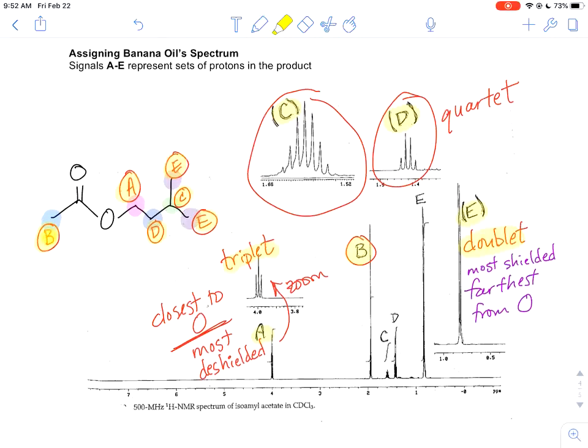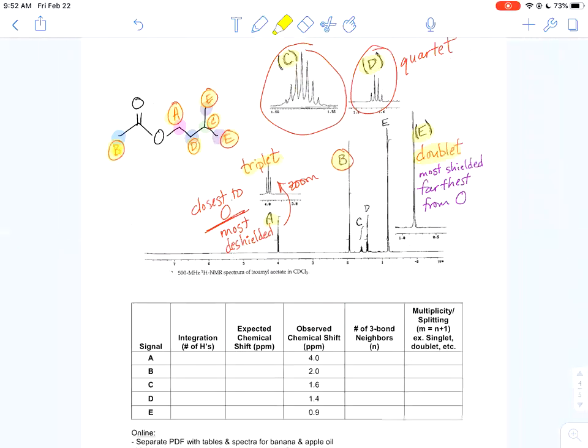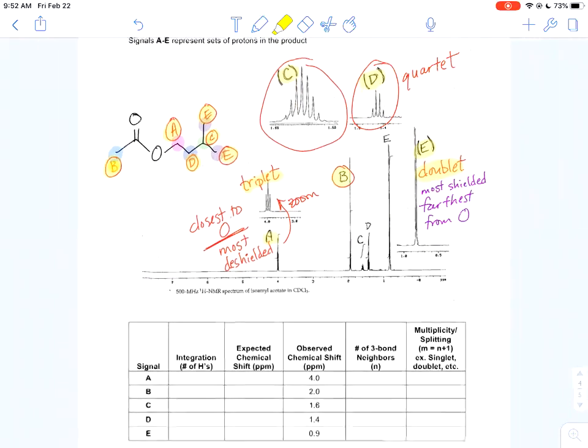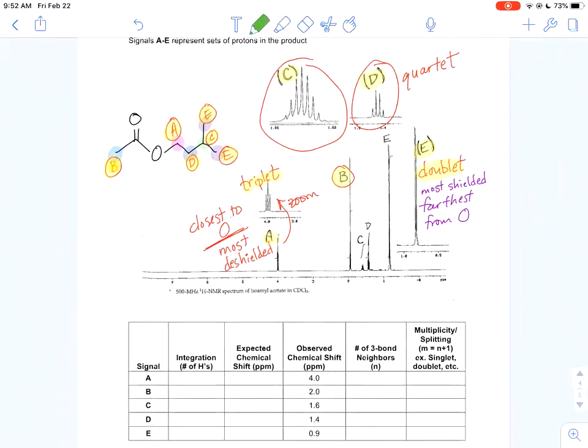Now to translate that into our tables, we're going to need a little bit more to elaborate, to fill in. I will let you all fill in the splitting and the number of neighbors part. I really want to focus on clarifying what to put for the expected chemical shift and for the integration. Let's do the chemical shift first because that's the one that you're more familiar with.